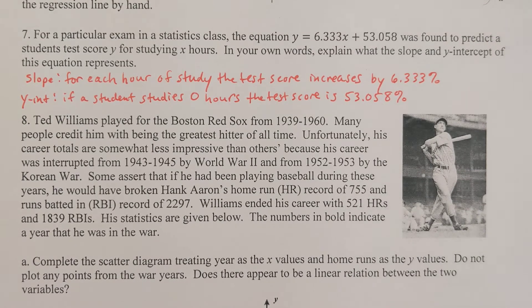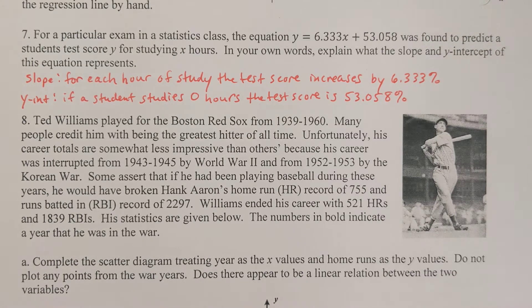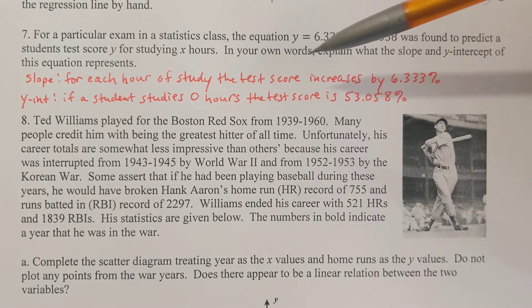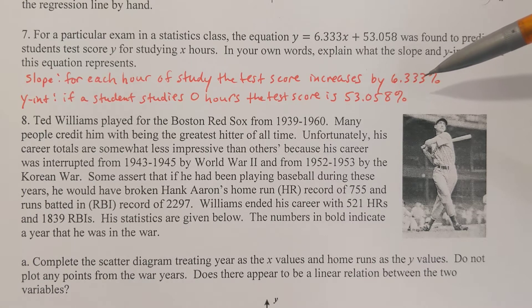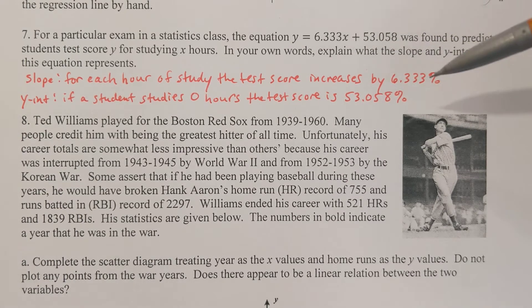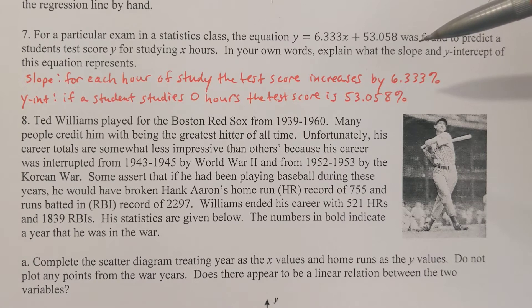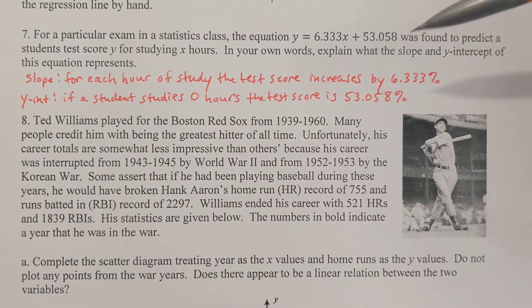Problem 7: For a particular exam in a statistics class, the equation y = 6.333x + 53.058 was found to predict a student's test score y for studying x hours. In your own words, explain what the slope and y-intercept represent. The slope is 6.333, which means for each hour of study, the test score increases by 6.333. A positive slope means you're increasing; a negative slope means you're decreasing. Since 6.333 equals 6.333 divided by 1, that's where we get 'each hour of study, the test score increases.'